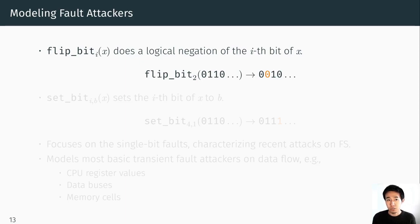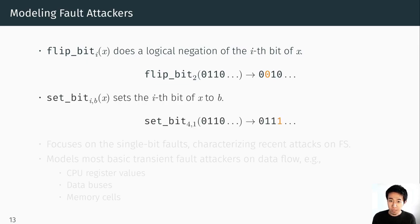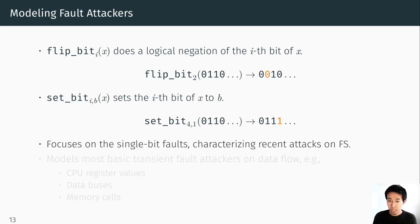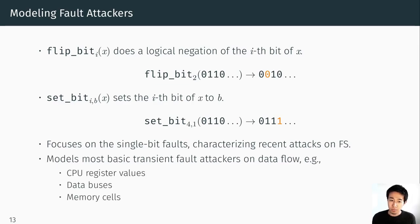To model the fault attacks, we provide two types of fault functions. The first is a flip-bit function, which performs a logical negation of a certain position of the target bit string. The second is a set-bit function, which allows the adversary to fix a certain position of the bit string. In this work we focus on single-bit faults, which is mostly sufficient for characterizing the recent fault attacks against deterministic Fiat-Shamir signatures we surveyed. These functions model the most basic transient fault attacks on the dataflow, such as bit flips on CPU register values, data buses, or memory cells.